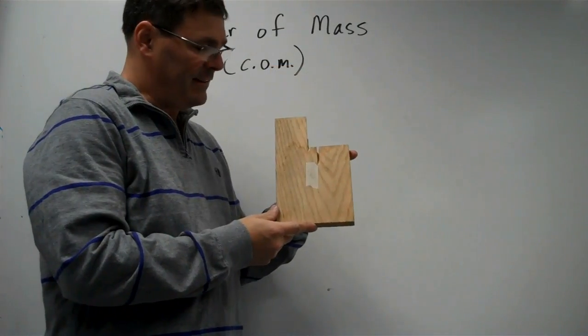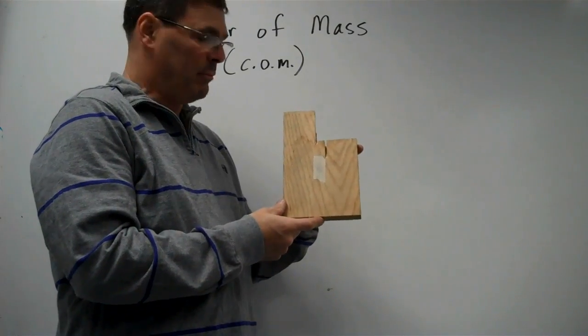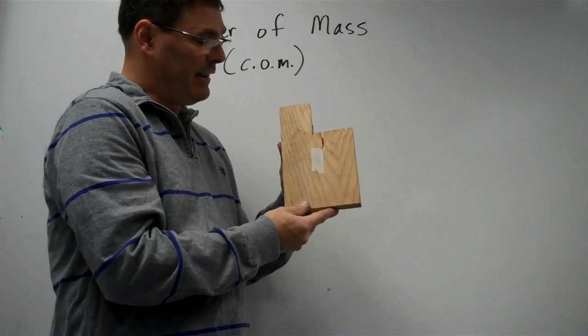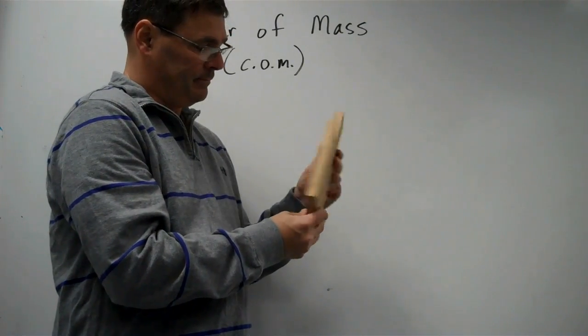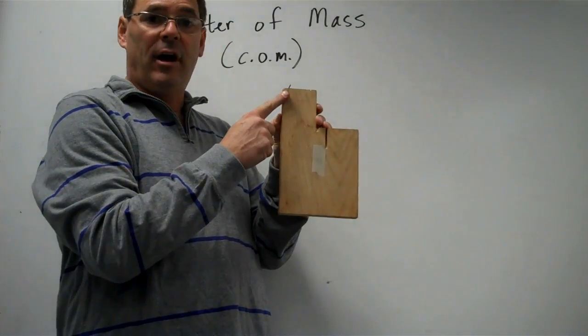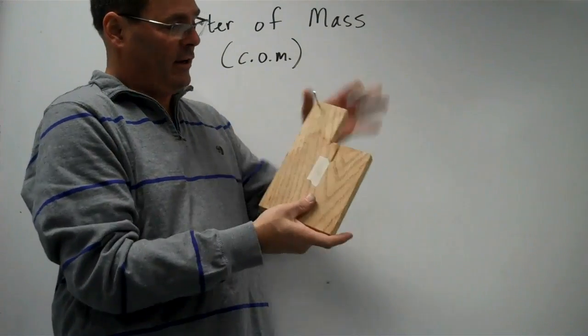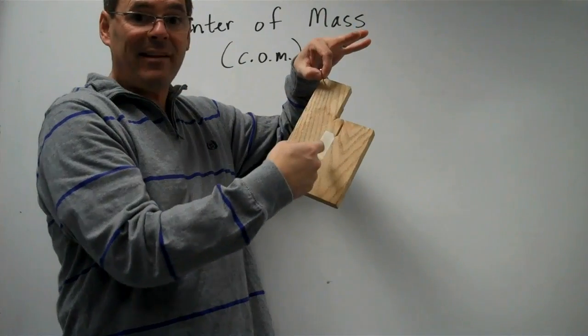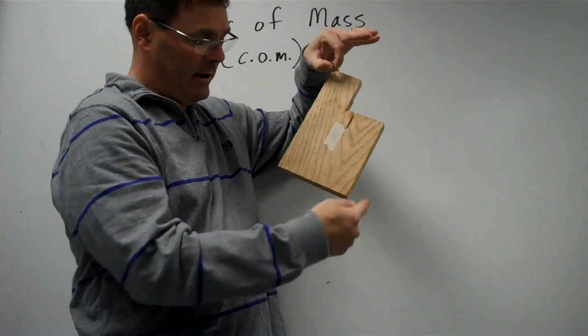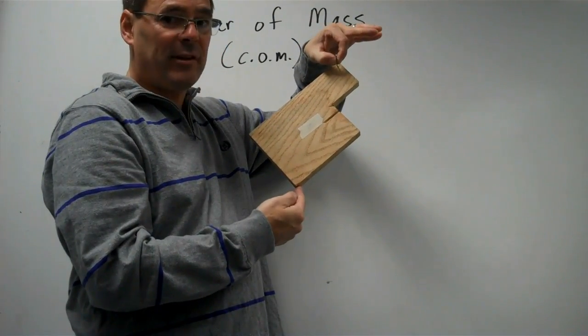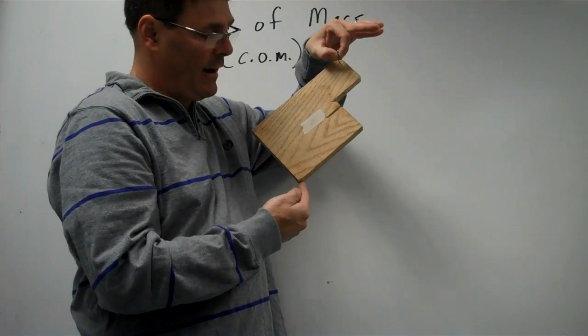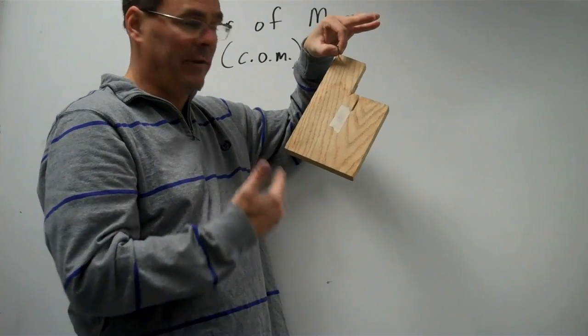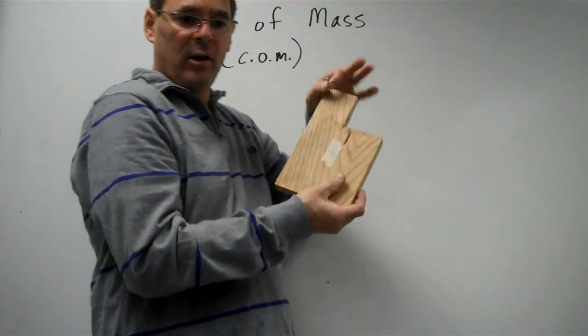The next object that we'll find the center of mass of is an irregularly shaped block. I've cut a corner out of this one so it's no longer a nicely shaped rectangle. I've hammered a nail into it so that I can support the block by the nail. I know that the center of mass will always hang below the point of support. If I make it so that the center of mass is not below the point of support, when I release it, it swings back.